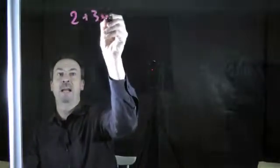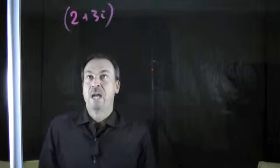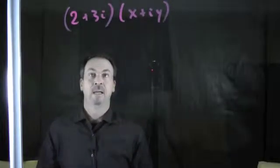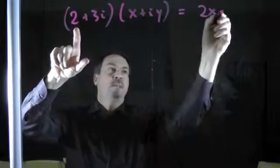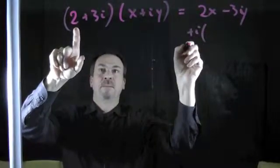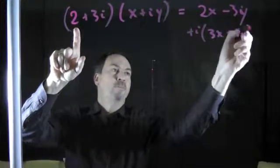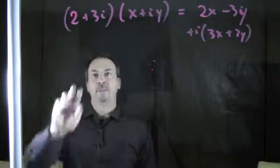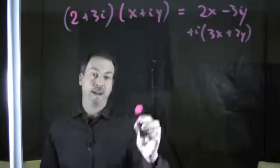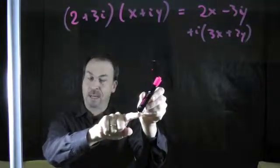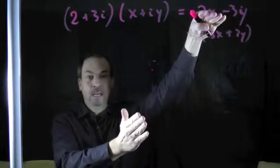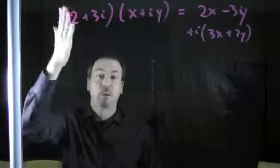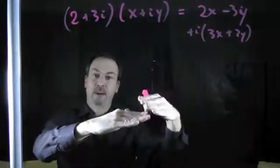For example, if I take the complex number 2 plus 3i and ask what multiplication by that number does to other complex numbers — so I can think of x plus iy, a general point in the complex plane — if I actually do this multiplication, I get 2x minus 3y plus i times 3x plus 2y. Students have analyzed this: multiplication by a complex number has two effects. It rotates all numbers by some angle and dilates things away from the origin. The magnitude of the dilation matches the magnitude of the complex number — that's the square root of 4 plus 9, square root of 13. So this represents some rotation followed by a dilation by a factor of root 13.